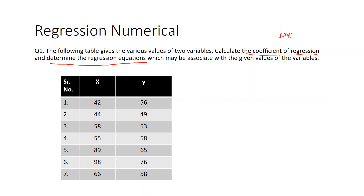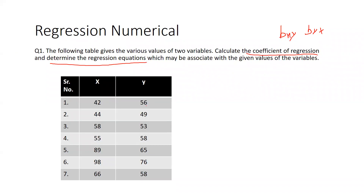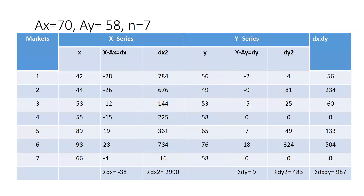We are going to calculate byx and bxy, and finally frame the regression equations. In this question, the assumed mean is already given: assumed mean Ax for variable x is 70, and for variable y it is 58. Total number n is 7. First of all, we are going to calculate Carl Pearson correlation.